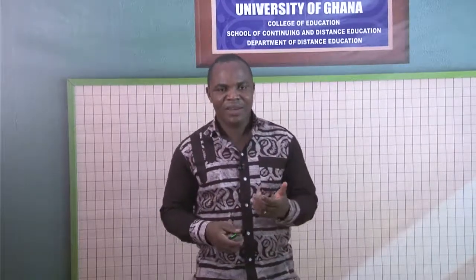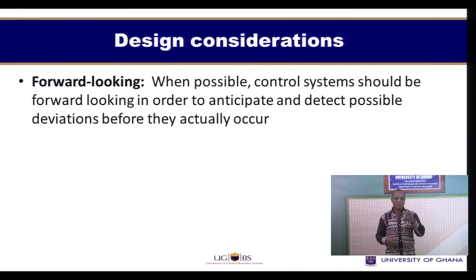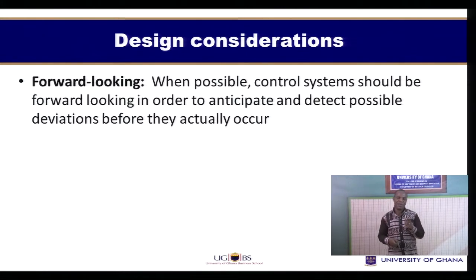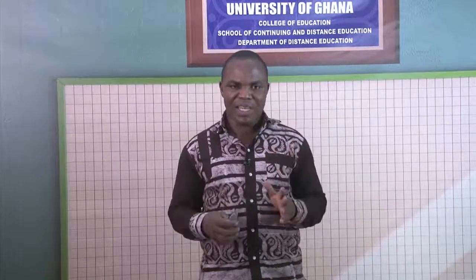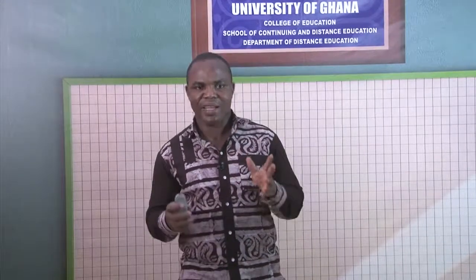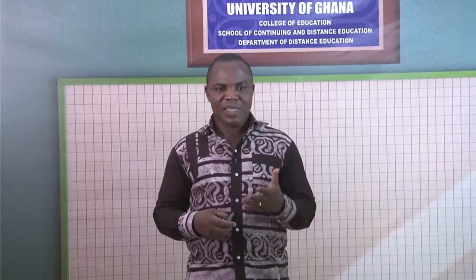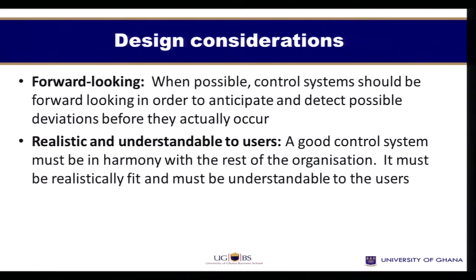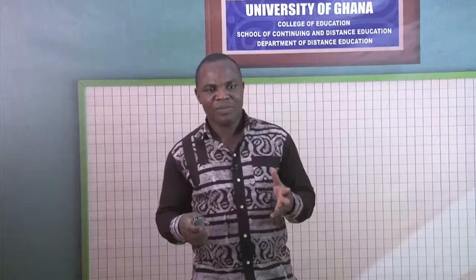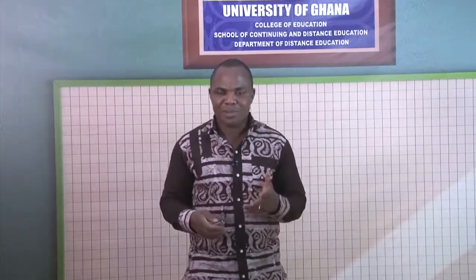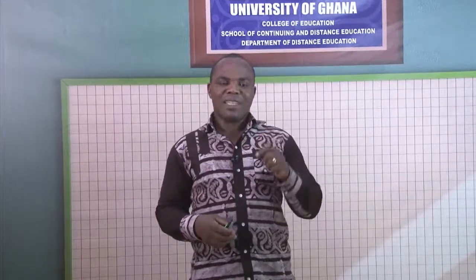Apart from the major managerial considerations, we also have design considerations. First, you have to consider whether the control system must be forward-looking. As much as possible, control systems should be forward-looking in order to anticipate and detect possible deviations before they actually occur. The control system must be robust enough not to wait for things to come to a head before actions are taken — it must be proactive in nature. The control system must also be very realistic and understandable to those who are going to use it.